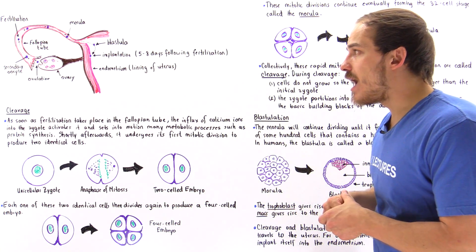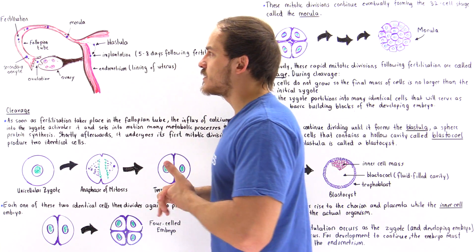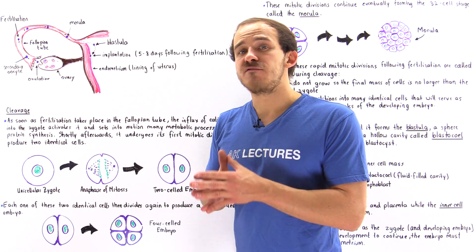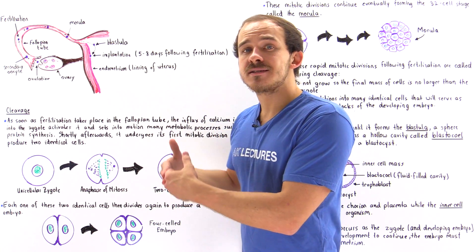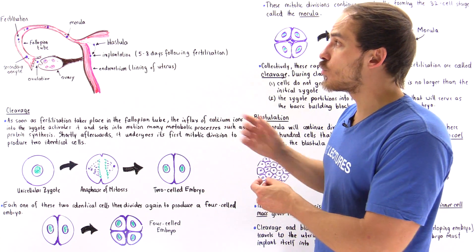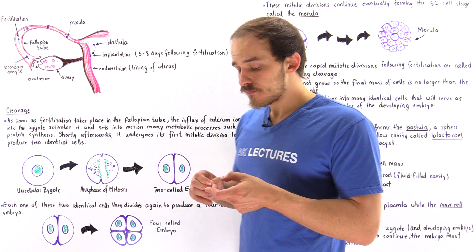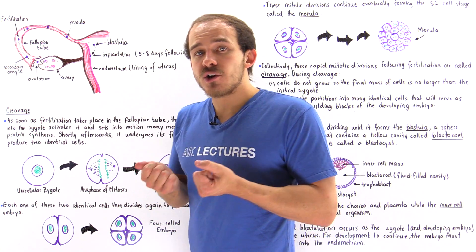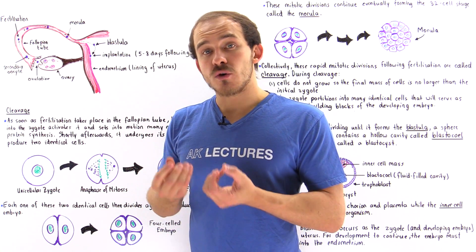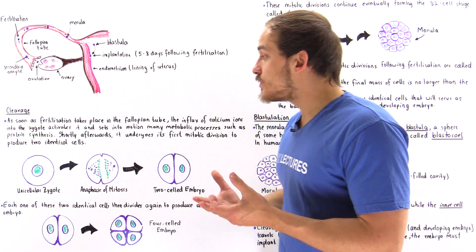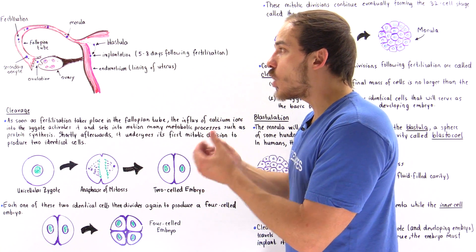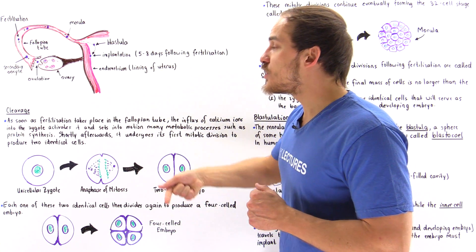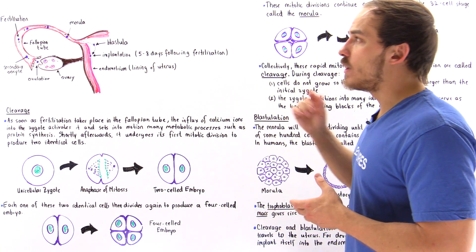The influx of calcium ions also initiates other metabolic processes such as protein synthesis, and eventually this leads to the process of mitosis. The zygote begins to divide shortly after fertilization. Because the entire organism is built from cells, we need to take that single-cell zygote and develop as many cells as possible — that's exactly why mitosis begins shortly following fertilization.